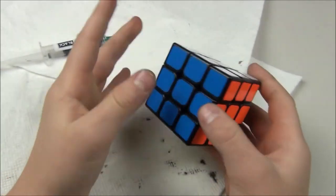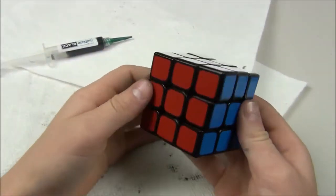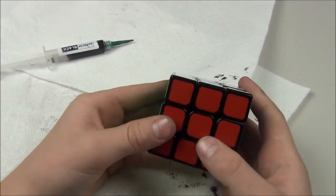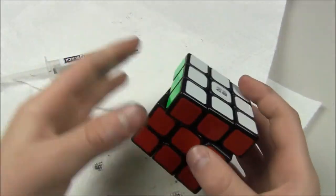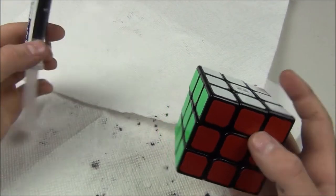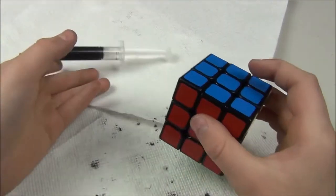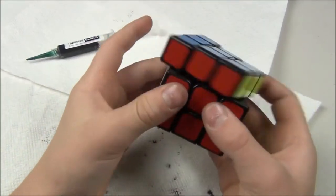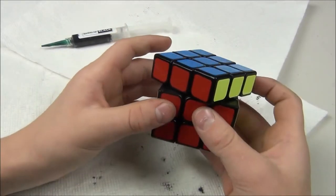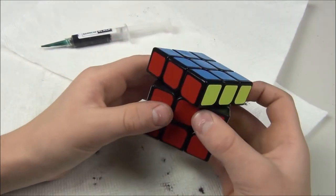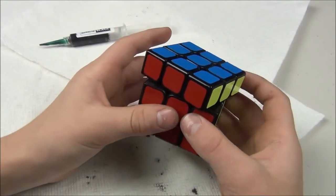Although the Qi Yi Sail was a good budget cube before, it had quite a bit of issues. It was really sandy, not good corner cutting at all. And you could really tell that it was a budget cube. But after just lubing the core with this lubricant, it greatly improved this puzzle so much. Before it could not corner cut 45. It could maybe do this much. Now it is going a little bit over 45.